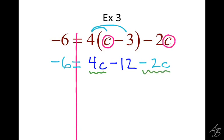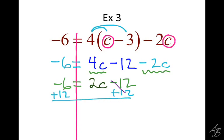We still have C in different places, so we combine like terms. The 4C and the minus 2C are like terms. 4C minus 2C is 2C. We cannot combine the negative 6 and the negative 12 even though they're like terms — they're on different sides of the equal sign. So we bring down minus 12 on one side and negative 6 on the other. Then we add 12 on both sides. Those 12s cancel on the right leaving 2C, and negative 6 plus 12 gives positive 6. Then divide by 2, and we get C equals 3.